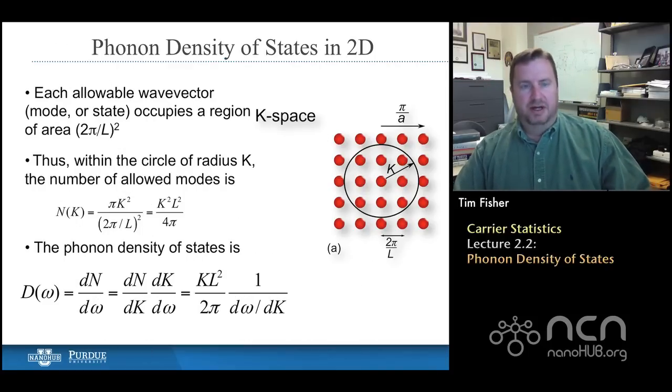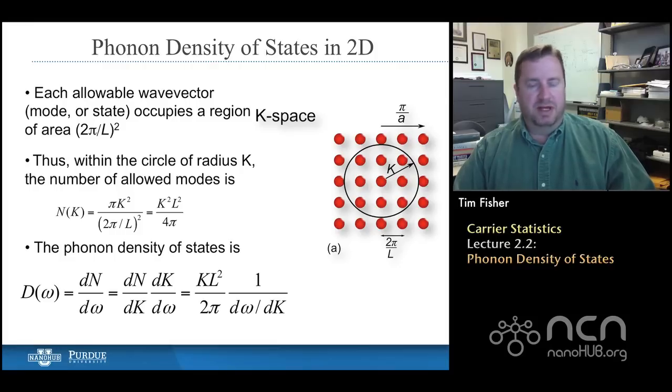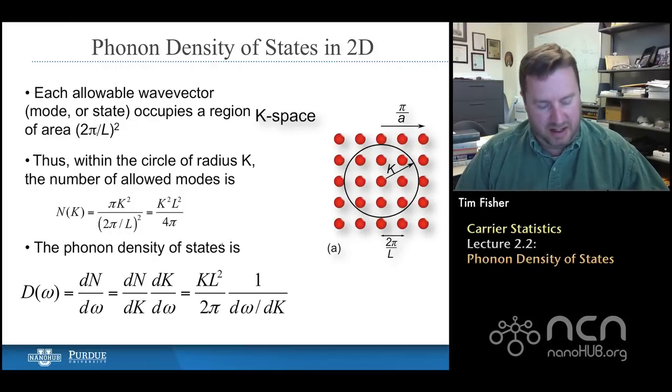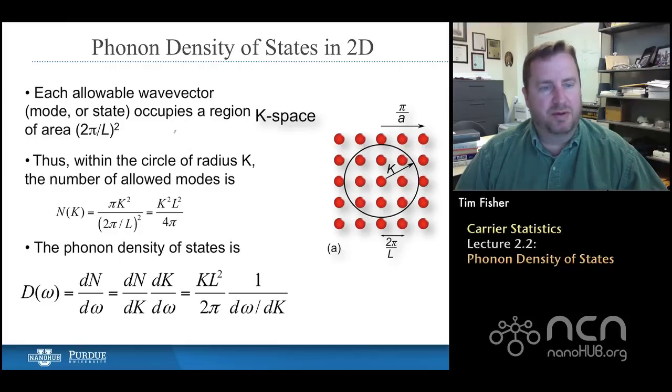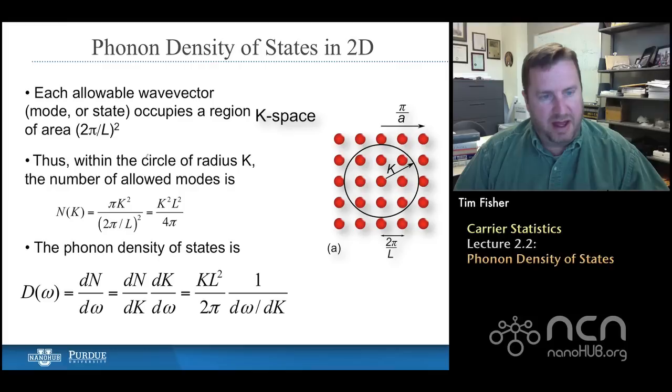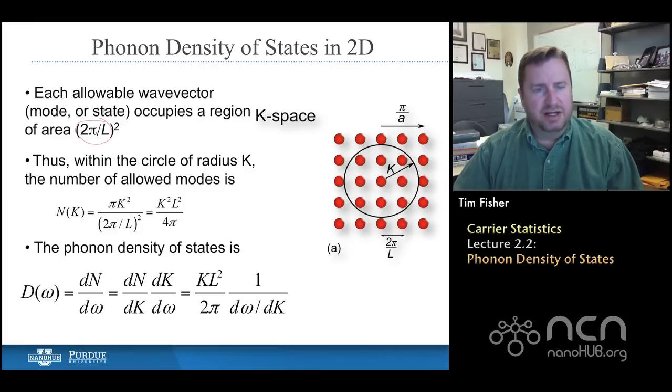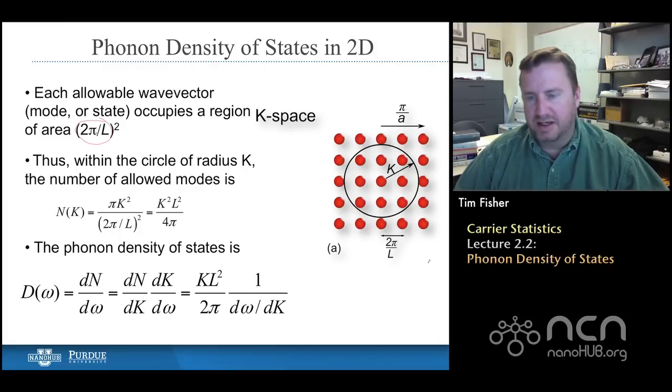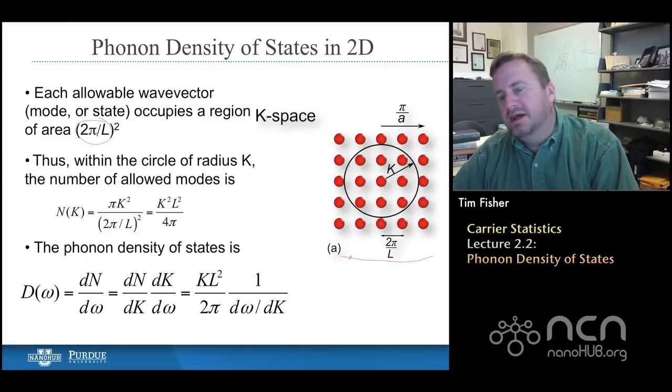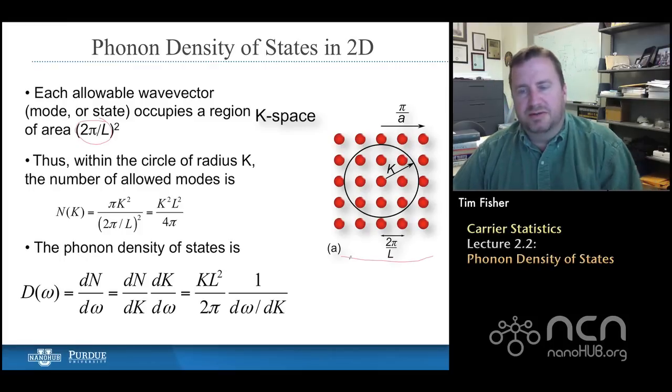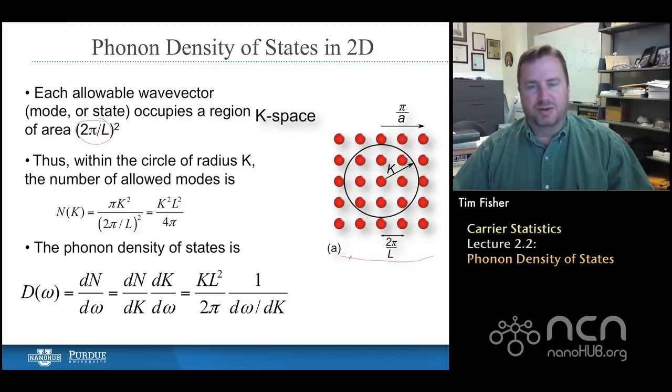So I'm going to start with a two-dimensional representation. We've seen this before a little bit. We had shown earlier that we could create a particle-in-a-box type of formulation for phonons, for any waves really, and that the allowable states in one dimension were separated by a distance of 2π over L. So now if I have a two-dimensional material, and again, this is on a square lattice, it's not any specific material, then I will have a distribution in k-space that looks like what's shown on the right, where each allowable k-state is separated by a distance 2π over L.